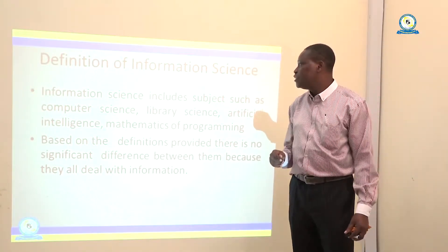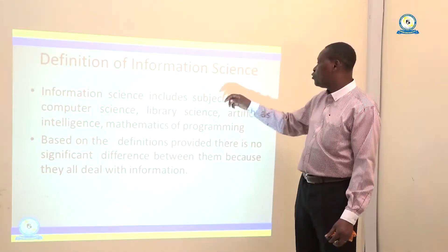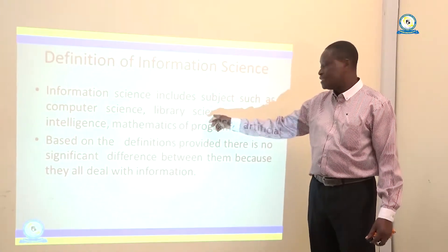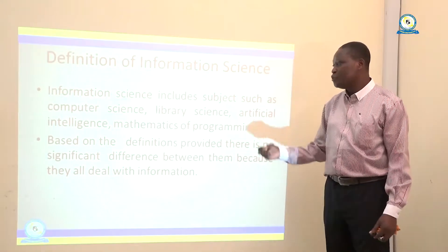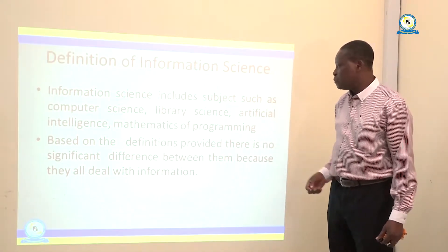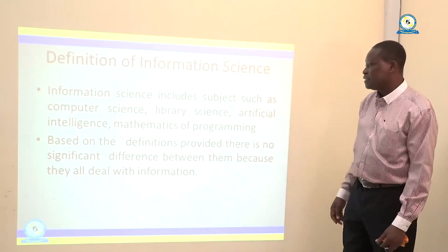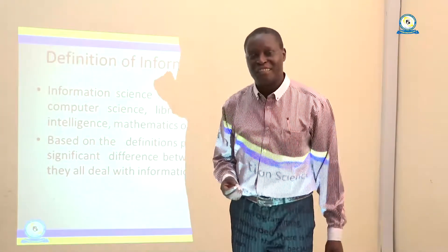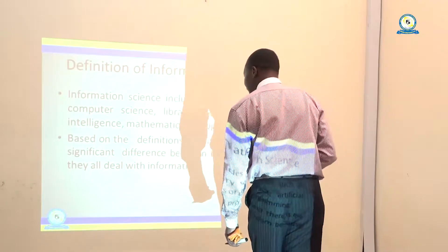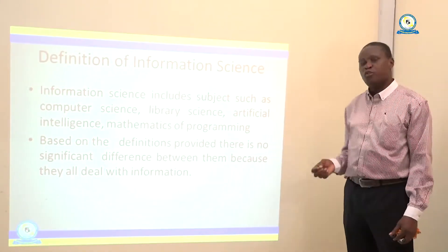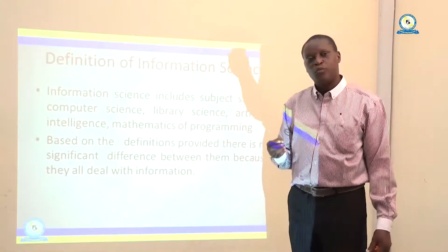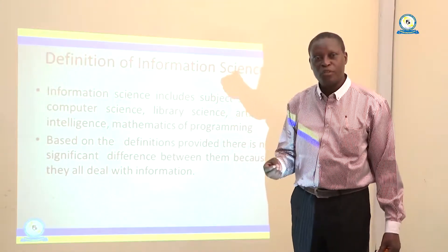Information science includes subjects such as computer science, library science, artificial intelligence — which is coming up as a new area of specialization — mathematics, and programming. When you look at these two definitions, library science and information science, there is no significant difference between them because they all deal with information.